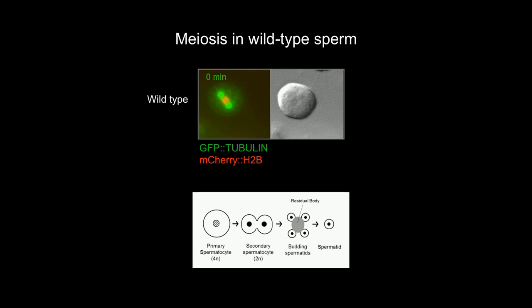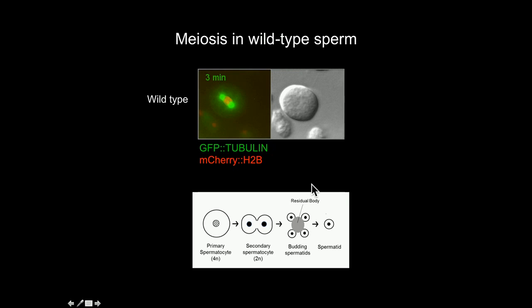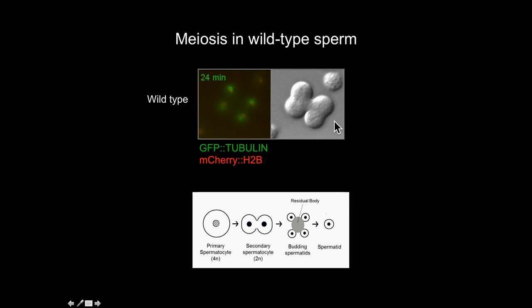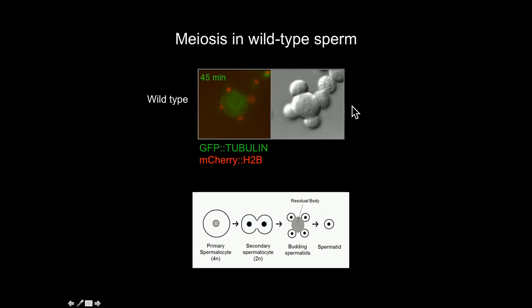To get a better idea of when and how things go wrong in 6-7 mutants, I've been performing time-lapse imaging to look at meiosis in the cells. In a wild-type movie, the cells start as primary spermatocytes, chromosomes get pulled apart, the spindle reorients, and haploid nuclei segregate into spermatids that bud off. You can see the spermatids budding, the residual body forming in the middle with spermatids surrounding it, and one spermatid budding off by the end of the movie.